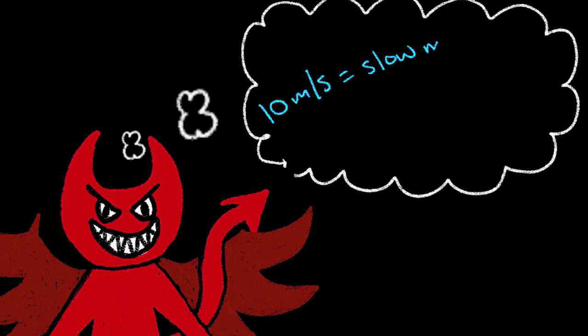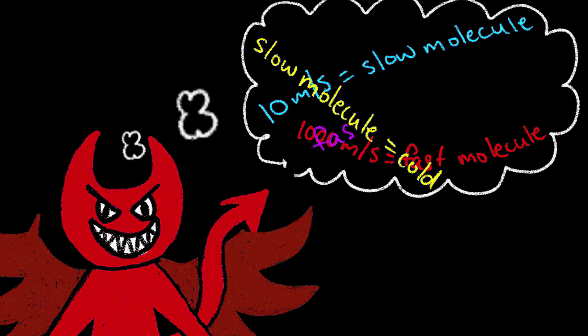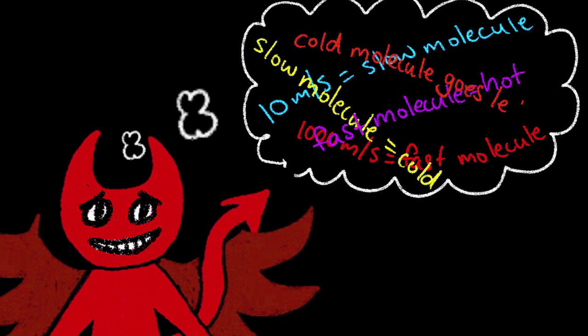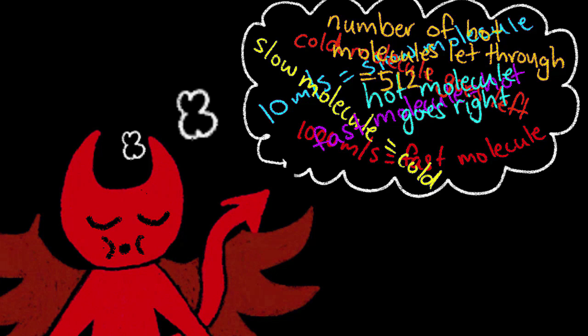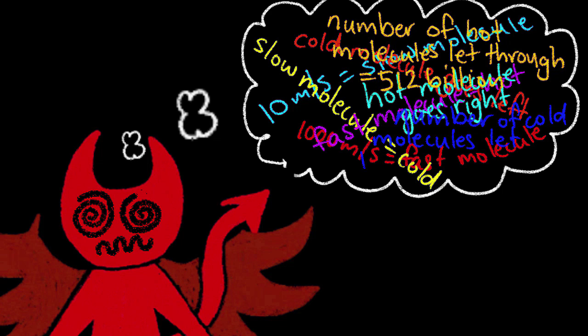To do his job, Maxwell's demon needs to be constantly measuring molecules, obtaining information, and making memories. He uses this information to lower the entropy of the box, but in doing this, he is using energy to organize all this information in his brain.